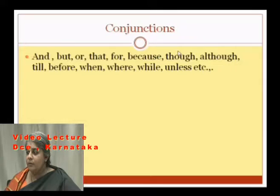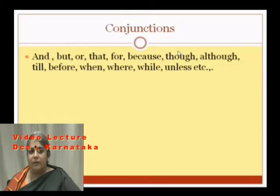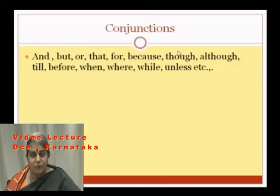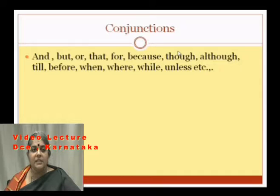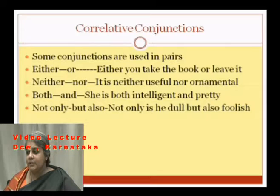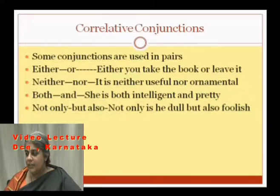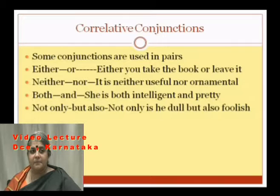Let us move on to understand what types of conjunctions there are. There are different types of conjunctions. The first one is correlative conjunctions. Some conjunctions are used in pairs.